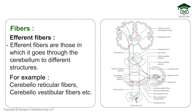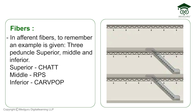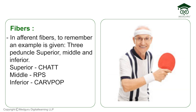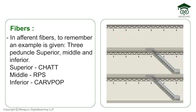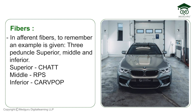We will talk about the afferent fibers of the three peduncles using a mnemonic story. Imagine a building with three floors. The top floor is the superior peduncle — Chacha is playing TT, giving us C-H-A-T-T. The middle floor is the middle cerebellar peduncle — people are betting in rupees, giving us R-P-S. The ground floor or garage is the inferior cerebellar peduncle — in the garage there is a car with V-POP playing, giving us C-A-R-V-P-O-P.